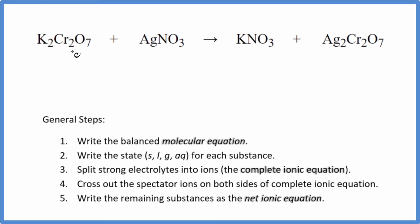In this video, we'll write the balanced net ionic equation for K2Cr2O7 plus AgNO3. This is potassium dichromate plus silver nitrate. The first thing we need to do when we balance net ionic equations is balance the molecular equation. And this is the molecular equation.